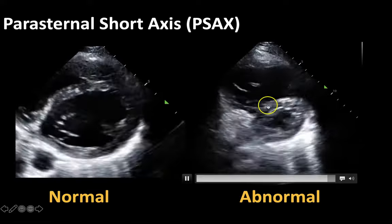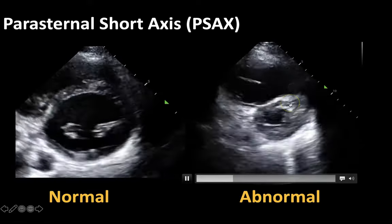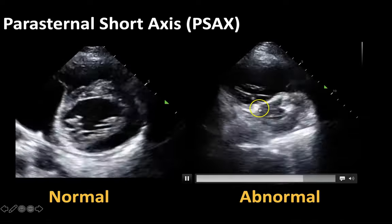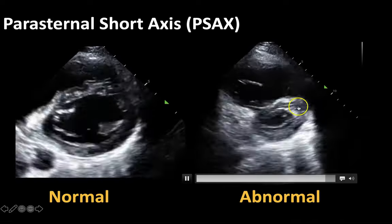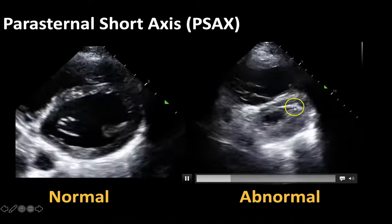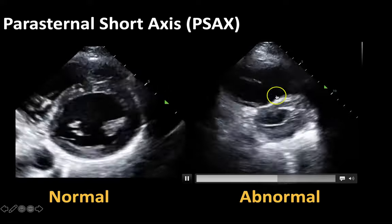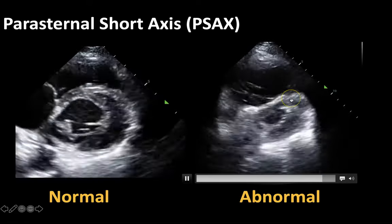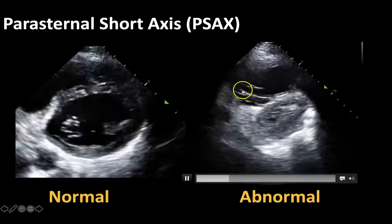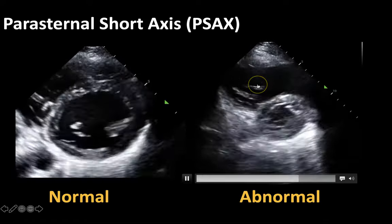This flattening of the septum we actually have a word for — we call it the D sign, because you can appreciate that the septum is kind of flat like the long side of a D. This is also an indicator of abnormal equality, a dilated right side of the heart, and right heart strain.